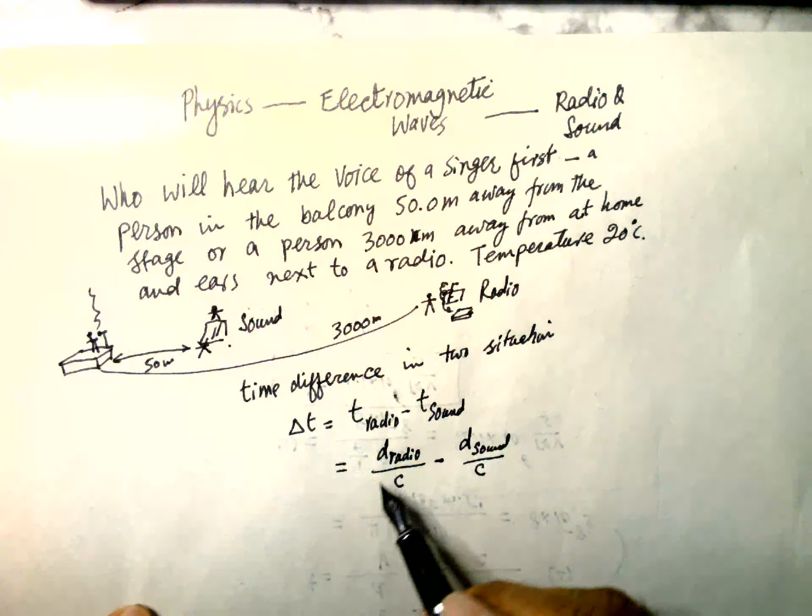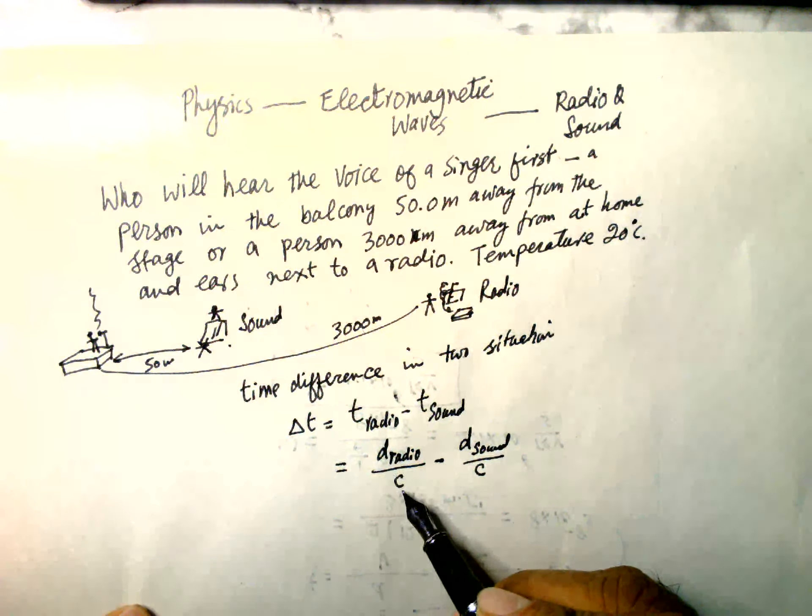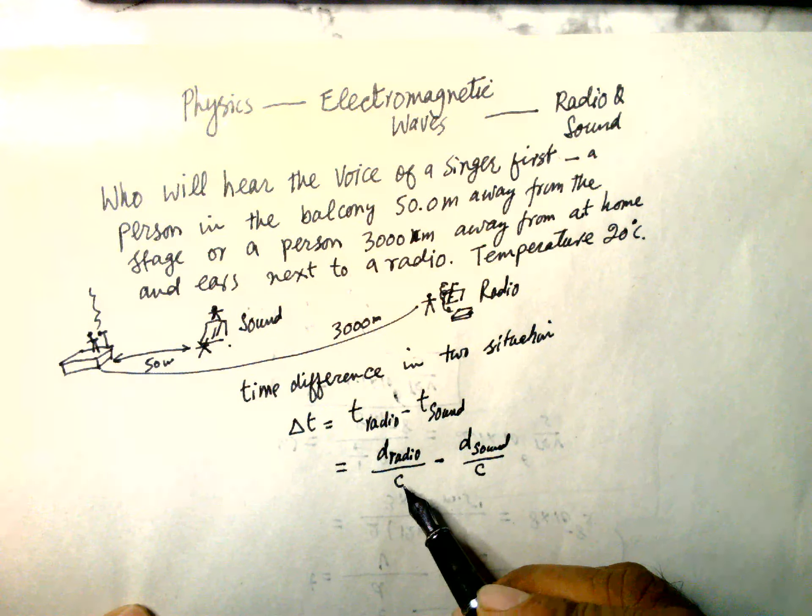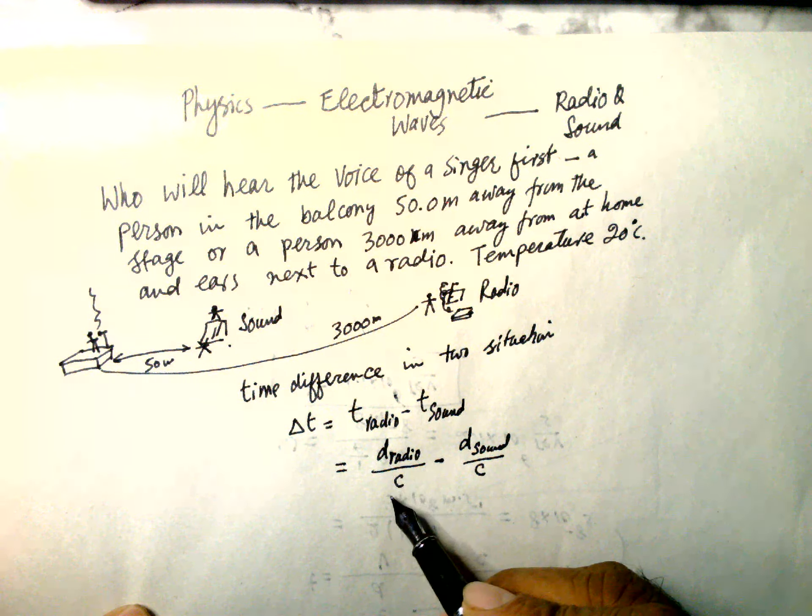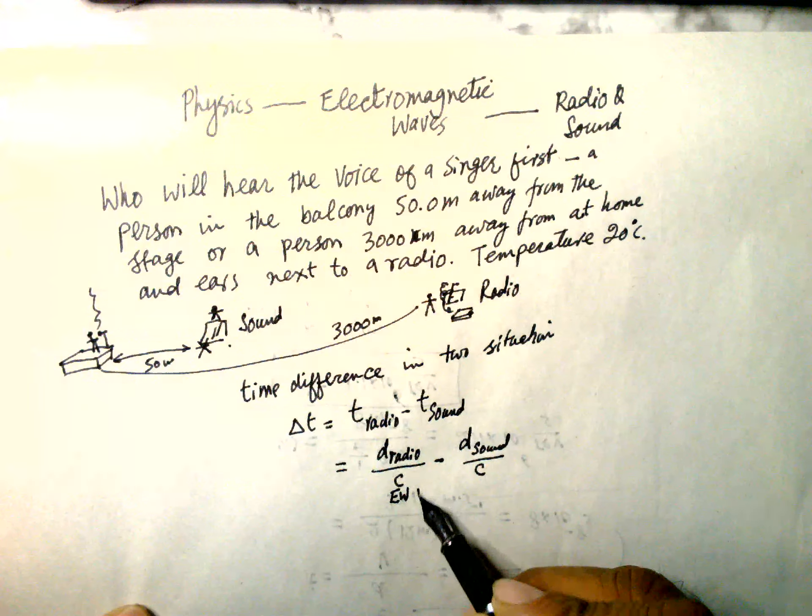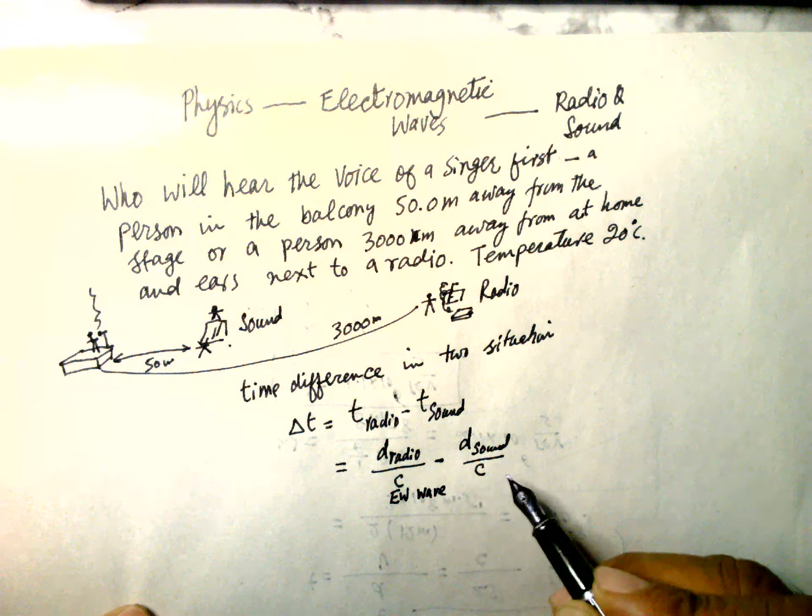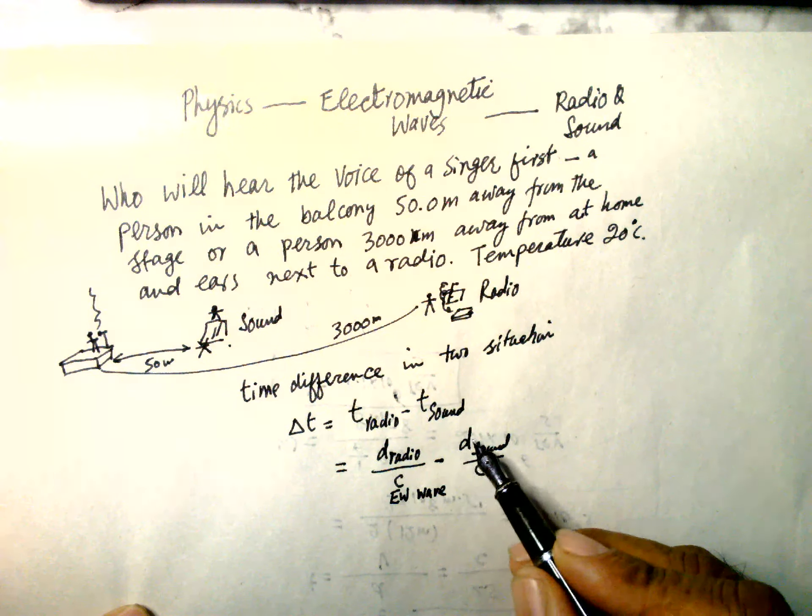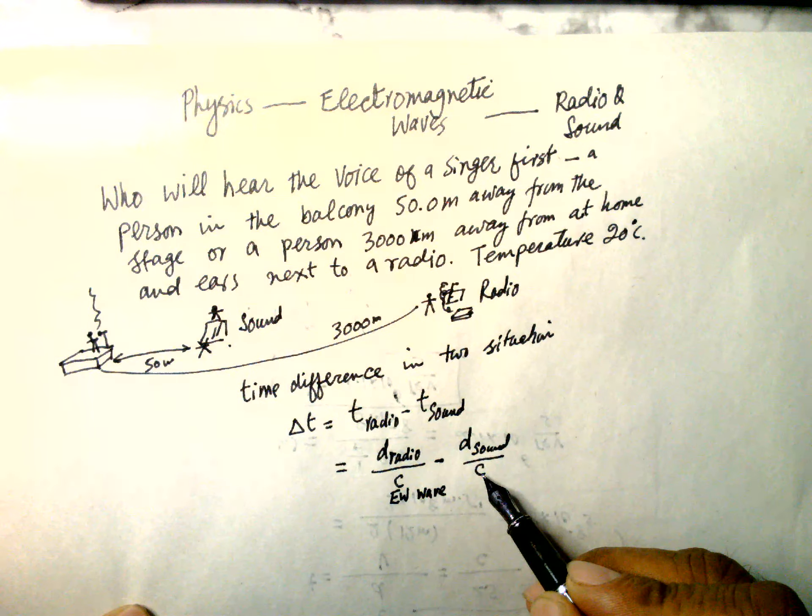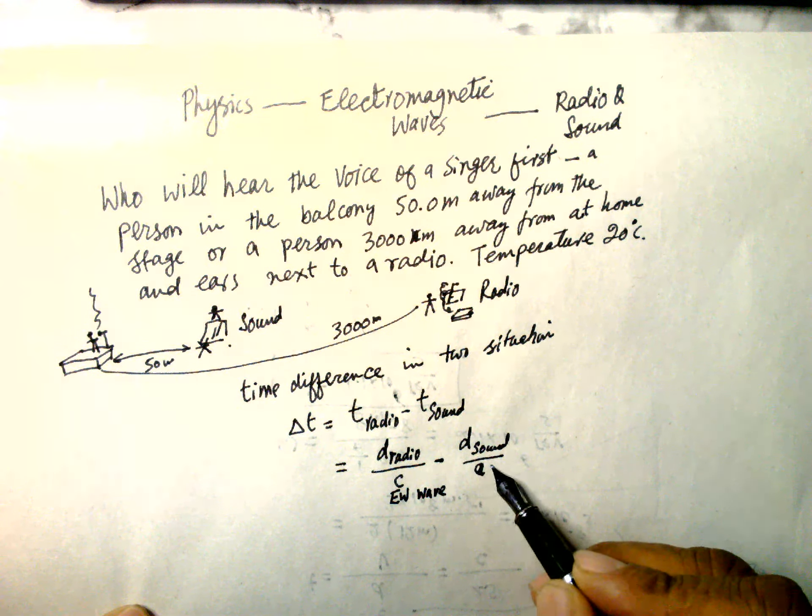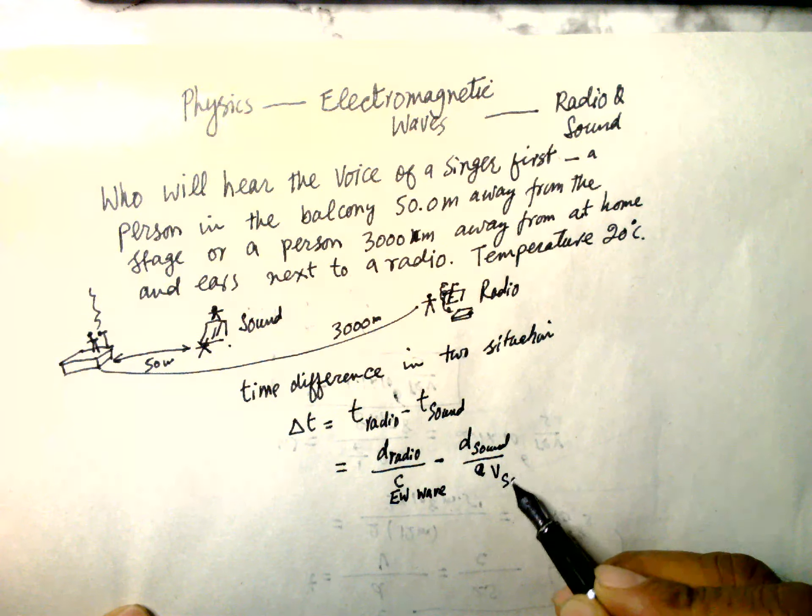Distance of the radio divided by c, which is the electromagnetic wave, the EM wave, minus the distance of the sound divided by the velocity of the sound, v_sound.